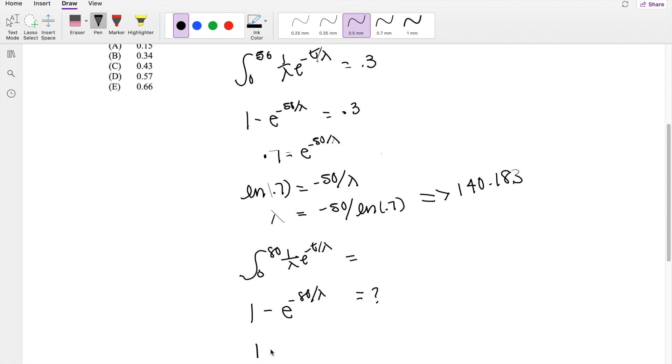So this is 1 - e^(-80/140.183). This is equal to 0.43486, which is our answer, C.